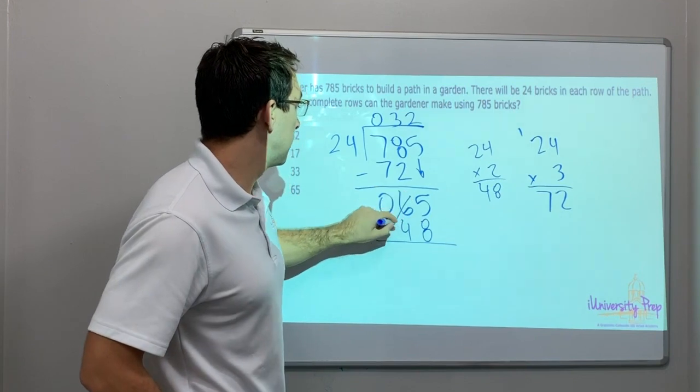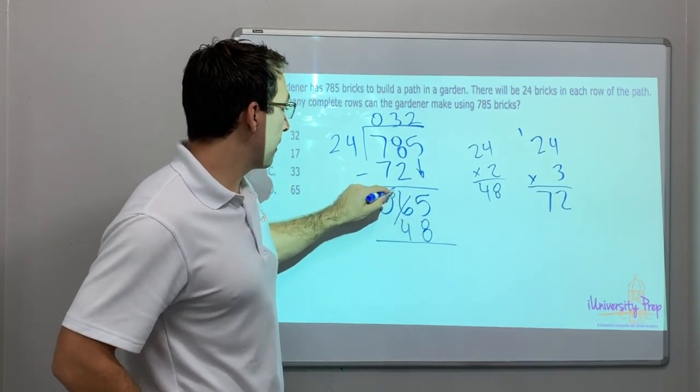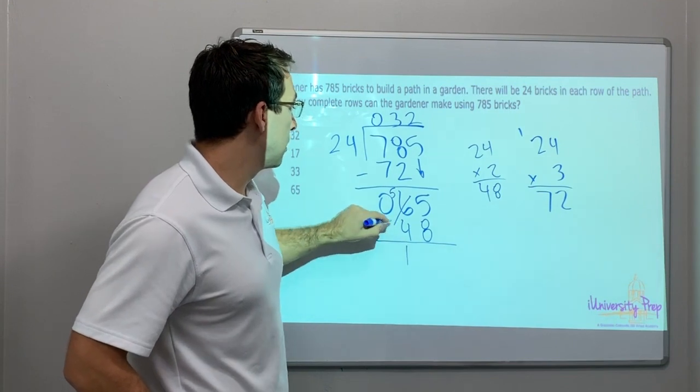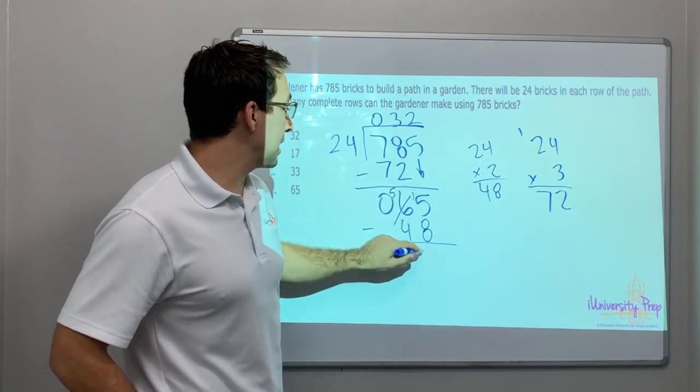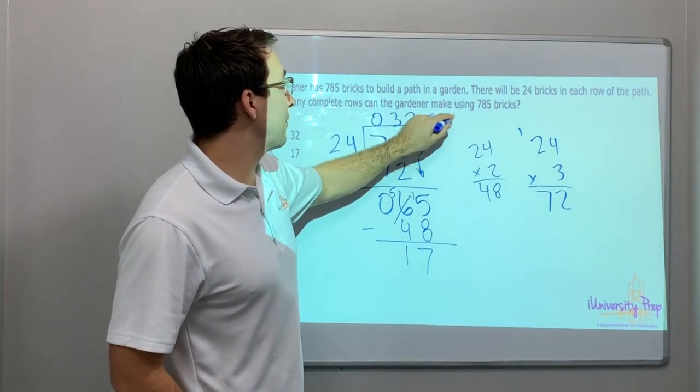And then we'll subtract. 5 minus 8, you can't do it. So borrow from the 6. So that's 5. 5 minus 4 is 1. Borrow from 15 minus 8 is 7. 32 remainder 17.